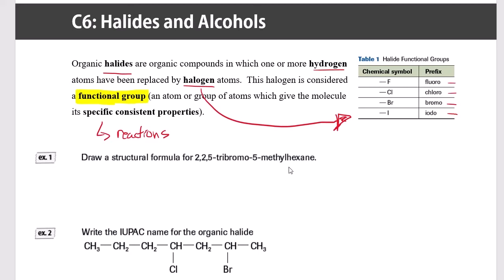But for now, let's just recognize that when we have something like a halogen or the alcohols that we're going to see next, those would be considered to be functional groups. So how do we name and how do we draw these? Let's start with drawing one so that we can see how it works. We've got a hexane backbone here, and there's a methyl group at carbon 5, and there are also some bromines - we have three of them on carbons 2, 2, and 5.